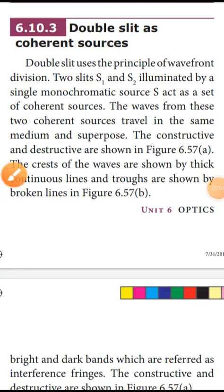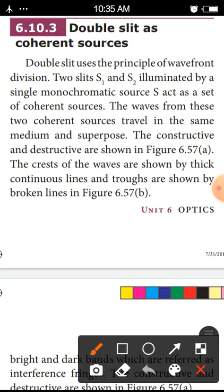Welcome media students. Next we are going to discuss about double slit and coherent sources. Two slits use the principle of wavefront division. The waves from these two coherent sources travel in the same medium and superimpose.